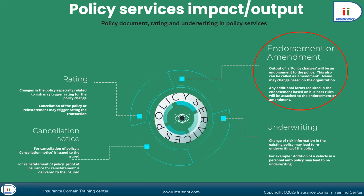It may happen that policy changes lead to an additional form being attached. Additional forms are required as part of the policy when any change is necessary in the main form. For example, if Mr. X in Nevada insured his car and later bought a trailer, he can apply for a policy change. The insurance company will then issue an endorsement with an additional trailer comprehensive/collision coverage endorsement form to insure the trailer. So additional forms may also come into play during a policy change transaction.